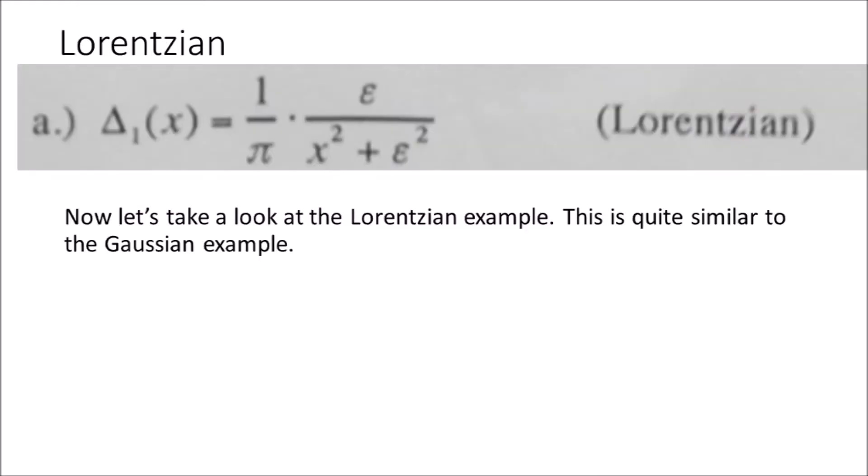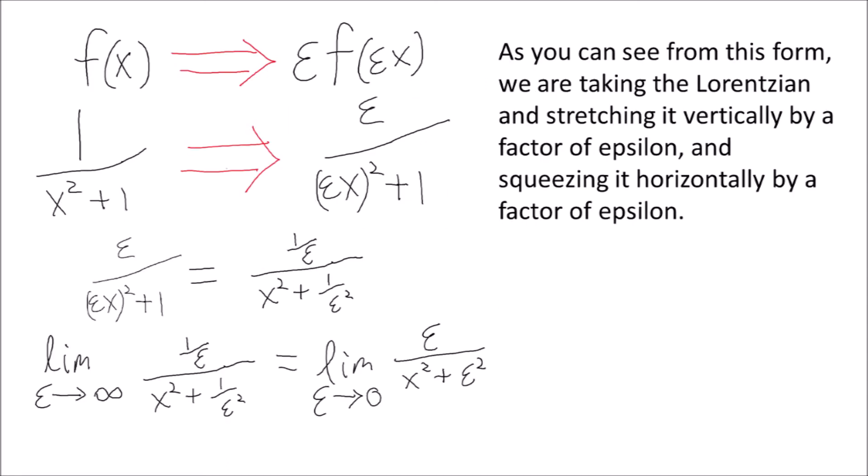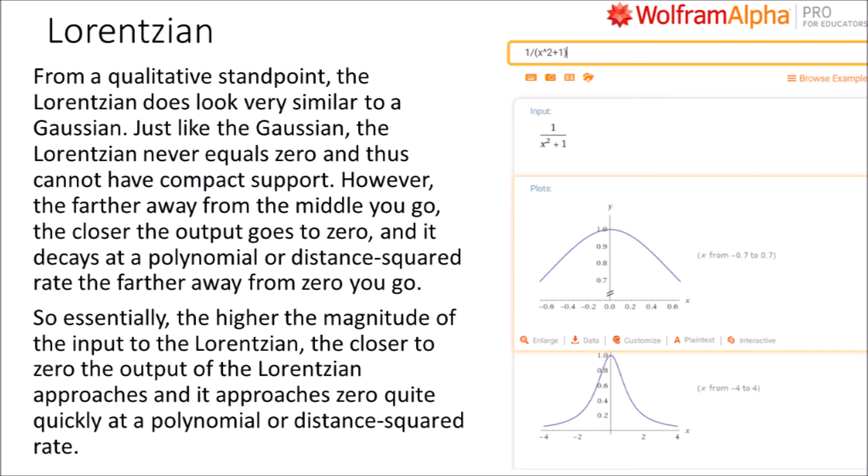Now let's take a look at the Lorentzian example, which is quite similar to the Gaussian. Ignoring normalization constants, let's put the Lorentzian in an easier form to work with. As you can see, we are taking the Lorentzian and stretching it vertically by a factor of epsilon and squeezing it horizontally by a factor of epsilon. From a qualitative standpoint, the Lorentzian does look very similar to a Gaussian.